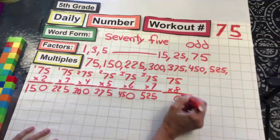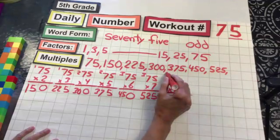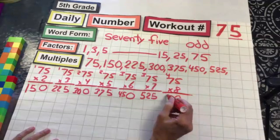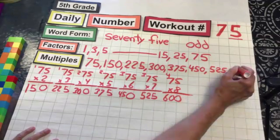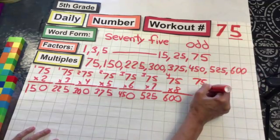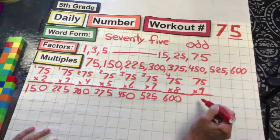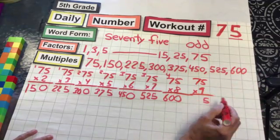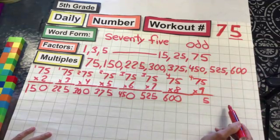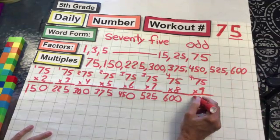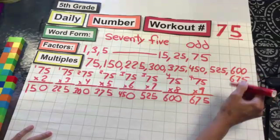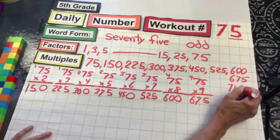8 times 5 is 40, drop the zero, carry the 4. 8 times 7 is 56 plus 4 is 60 — six hundred. Nine 75s: 9 times 5 is 45, drop the 5, carry the 4. 9 times 7 is 63 plus 4 is 67 — six hundred and seventy-five.